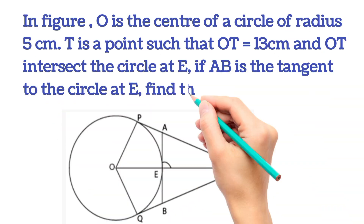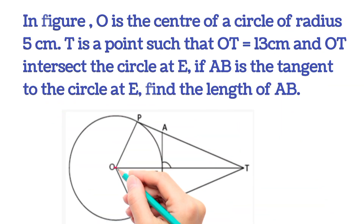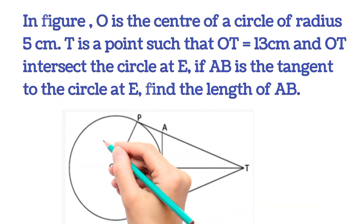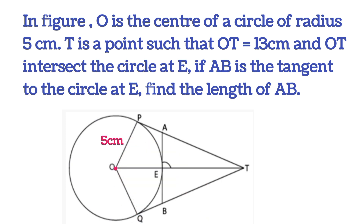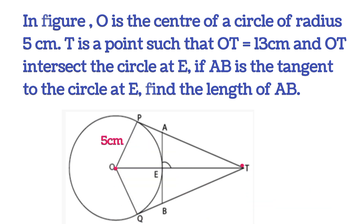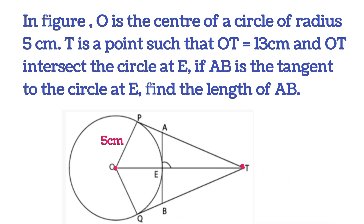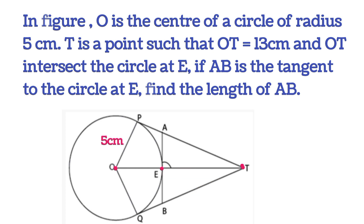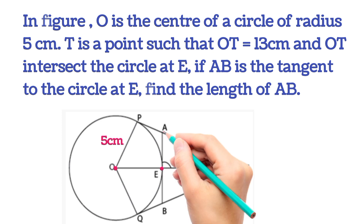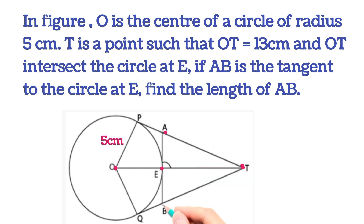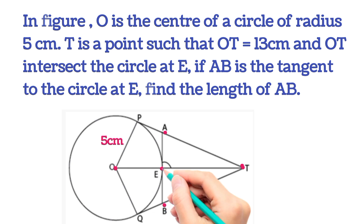Hello everyone, welcome back once again. Here is a question in which O is the center of the circle of radius 5 centimeters. T is a point such that OT is 13 centimeters, and OT intersects at point E. If AB is tangent to the circle at point E, then find the length of AB.